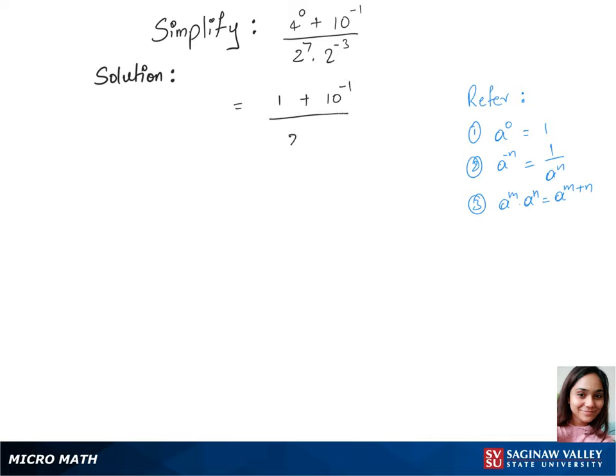And we are using rule 3 here to write 2 power 7 minus 3. And in our next step we have 1 plus 10 power minus 1 over 2 power 7 minus 3 is 4.